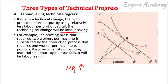For example, if a printing press that required two workers per machine is substituted by a production process that requires only one worker per machine to produce the given quantity of printing materials, then the labor-capital ratio falls and it will be labor saving technical progress.